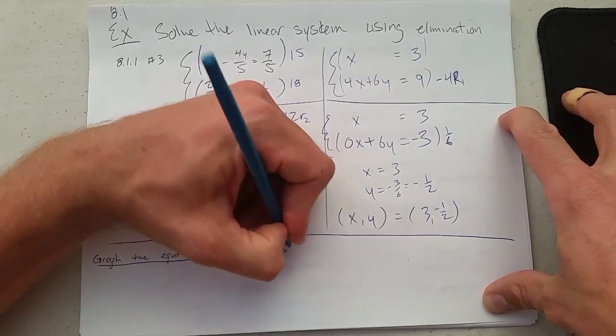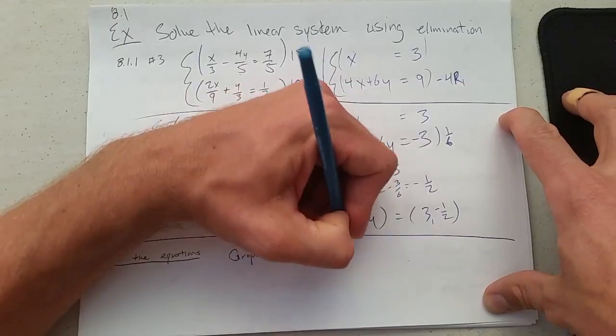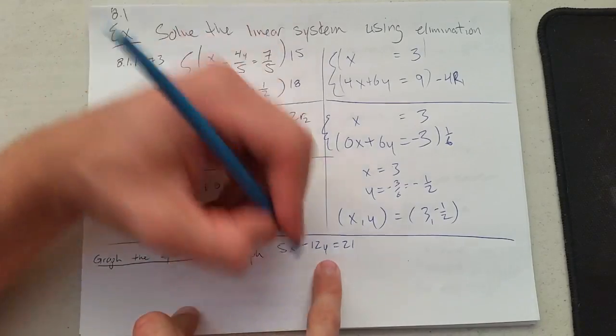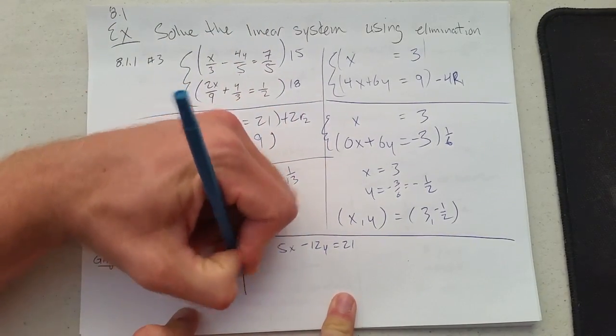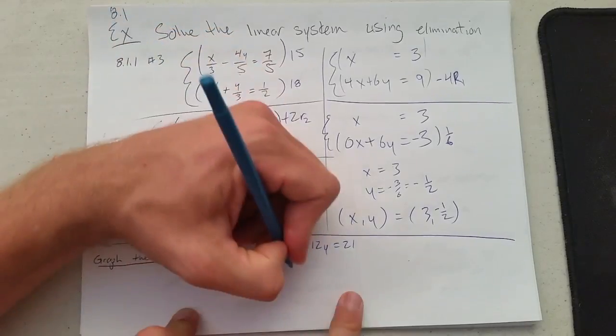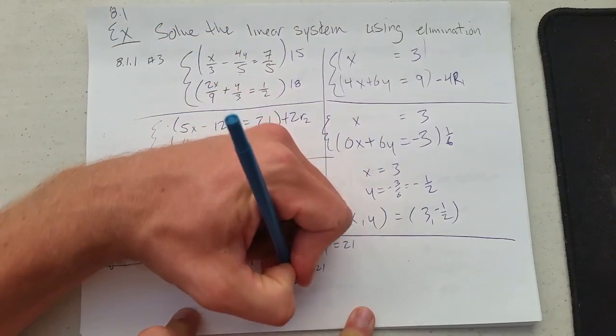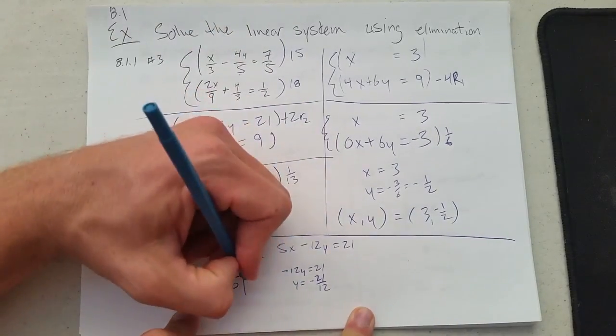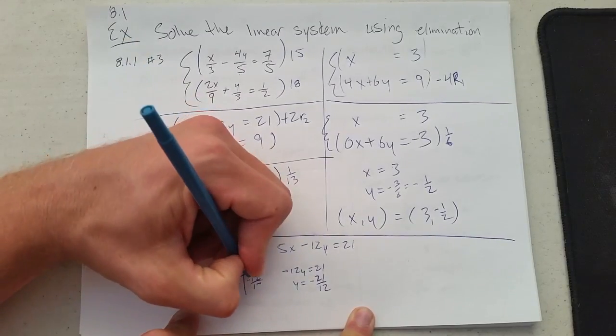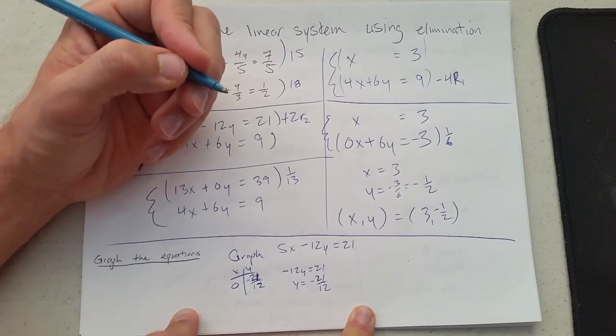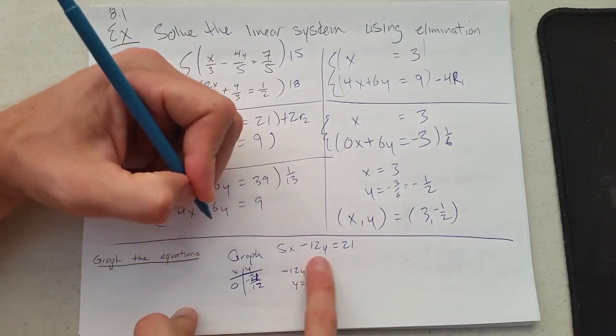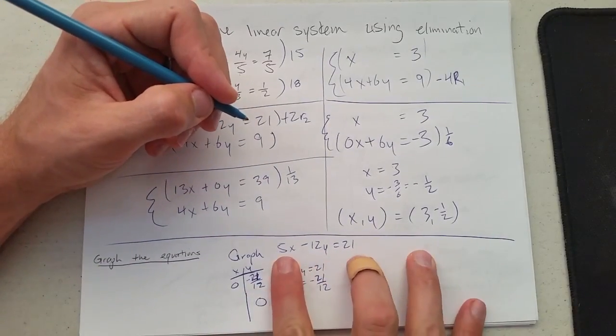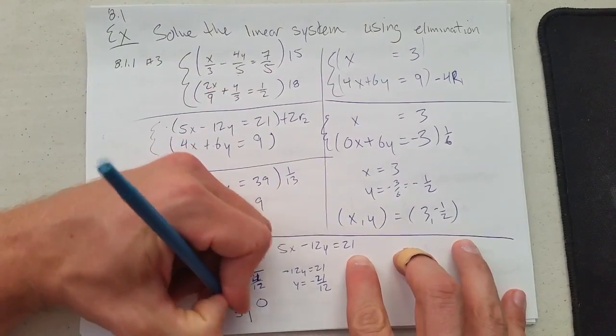First, we'll graph 5x minus 12y equals 21. The easiest points: when x is 0, what is y? Minus 12y equals 21, so y equals negative 21/12—pretty close to negative 2. When y is 0, what is x? Dividing gives 21/5, close to 4.